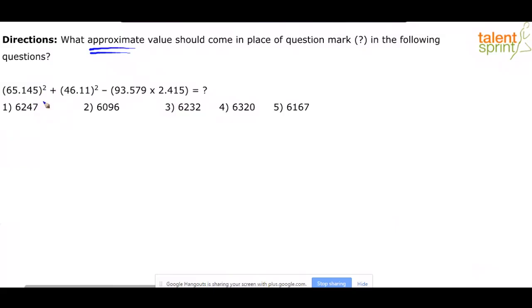Now, the first step while answering questions from approximations is to look at the options. Look at options 6247, 6096, 6232, 6320, 6167. In my view, these options are close, too close.